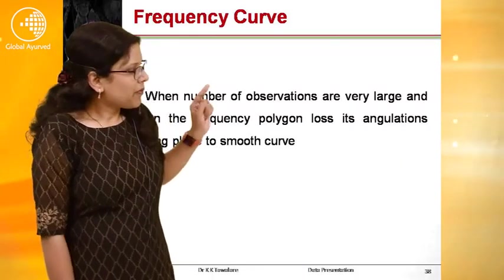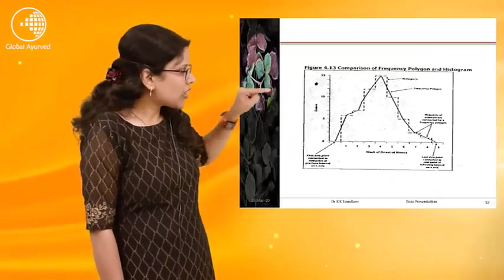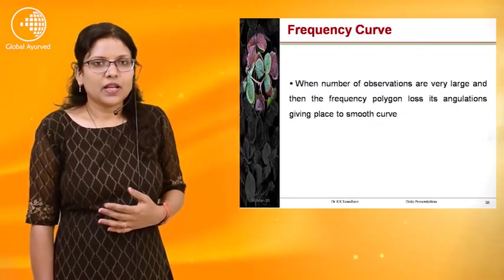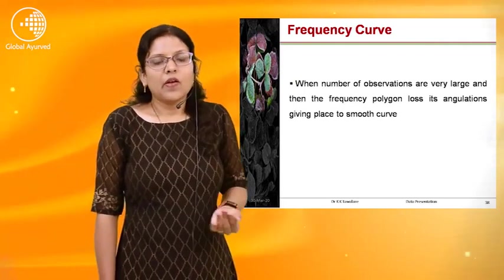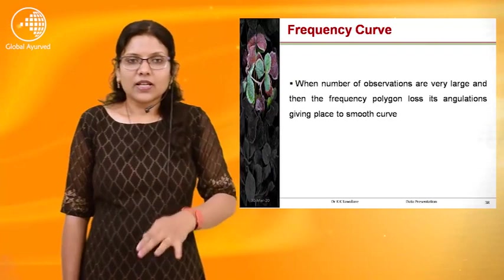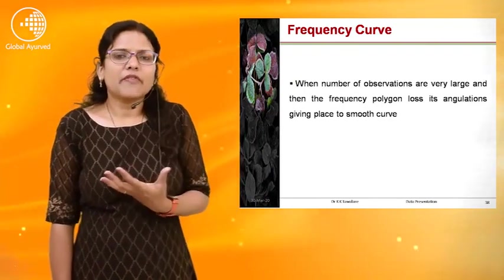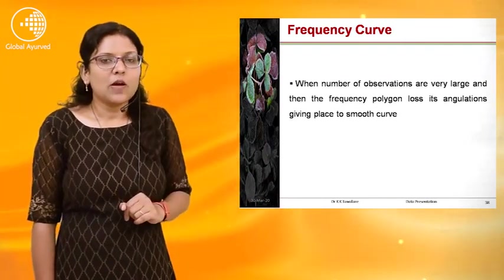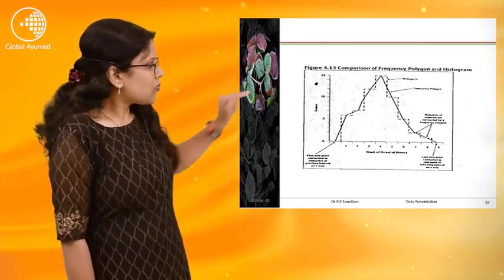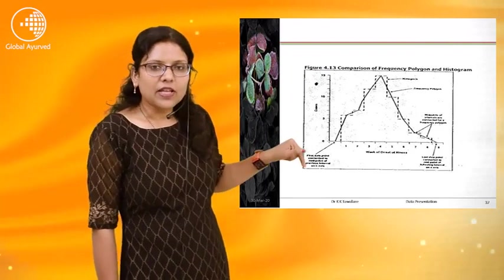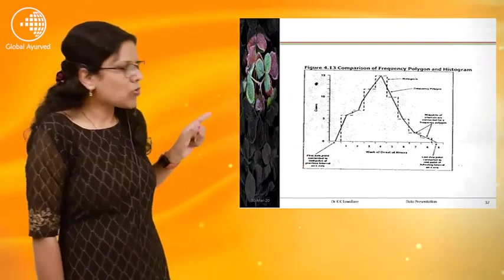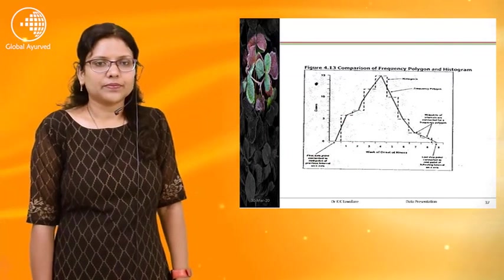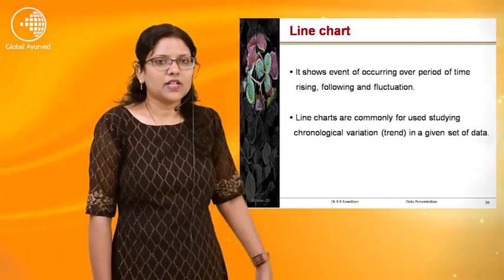Next is the frequency curve. The frequency polygon has many angles. When the number of observations is very large, the frequency polygon loses its angulation and gives a smooth curve — that is called the frequency curve.